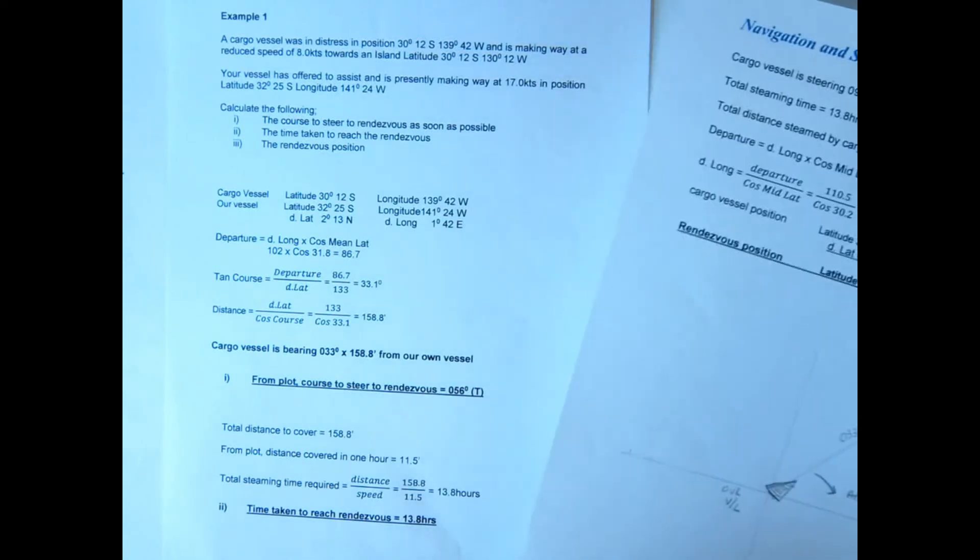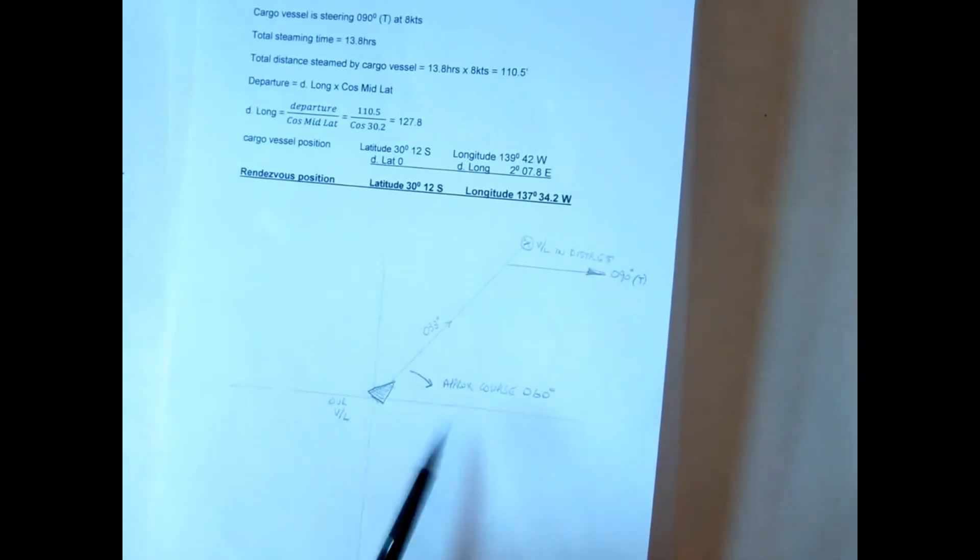And the vessel is doing a course of 090. So I've just done a very quick sketch here, just to give me an idea what our course should be approximately before I do the plot. So there's the bearing, there's ourselves and the other vessel in the distance. The other vessel is going on a course of 090, so naturally our course will have to be further to starboard than 033. So maybe 060, something like that. Certainly north-east.